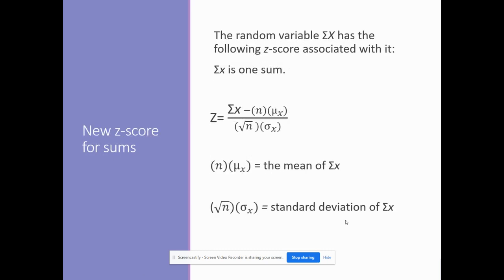All right, so let's look at this. Down here again, you see what my mean will be of the sum of X. It will be the sample size times the mean I'm given. Standard deviation is the square root of the sample size times the standard deviation I'm given. That's all you have to do. It's different than what we did before, because remember, we were doing means before. Now we're doing sums.